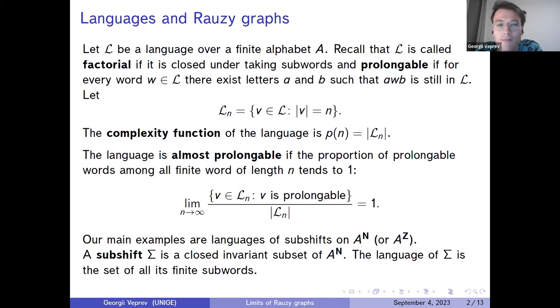First of all, let L be a language over some finite alphabet A. The language is called factorial if it is closed under taking subwords, and prolongable if for every word w in L there exist letters a and b such that awb is still in L. Let L_n be the set of all words in the language of length n. The complexity function of the language is p(n) equals the size of L_n. The language is almost prolongable if the proportion of prolongable words among all finite words of length n tends to 1. So this limit is one.